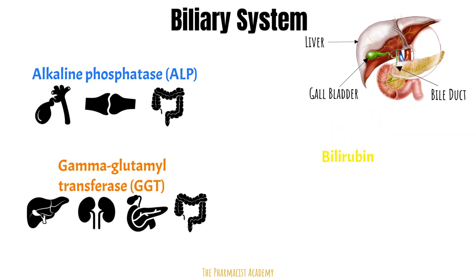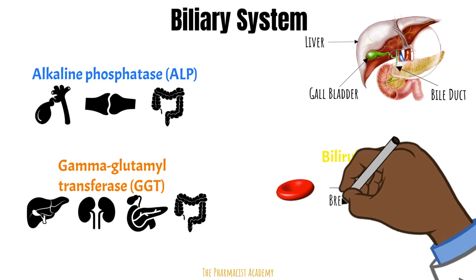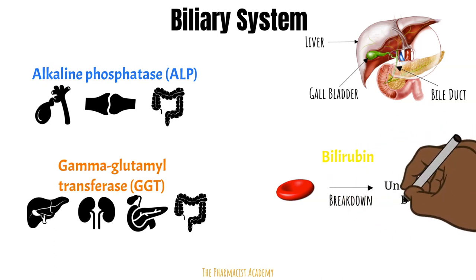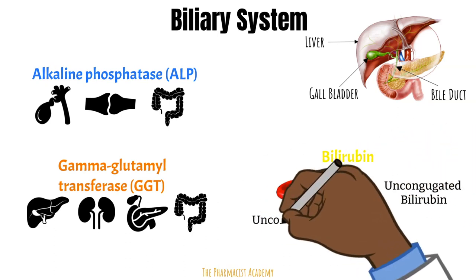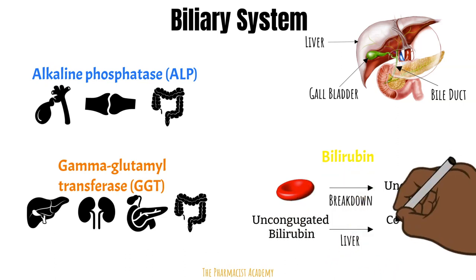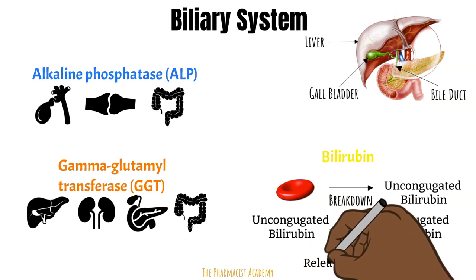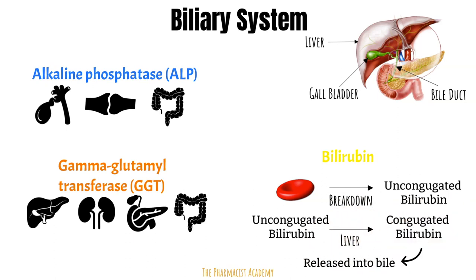Bilirubin is also part of the biliary system. When red blood cells are broken down, they form unconjugated bilirubin. Unconjugated bilirubin then goes through the liver to form conjugated bilirubin. This conjugation makes the bilirubin more water-soluble, so it can be excreted through the kidneys. Conjugated bilirubin is also secreted into the bile and gut for excretion.